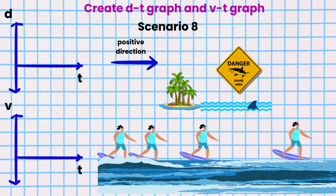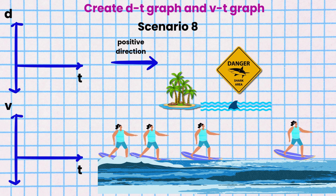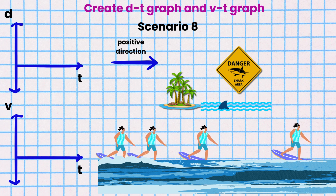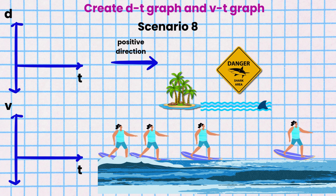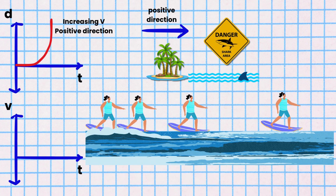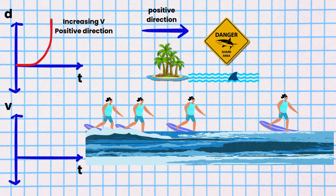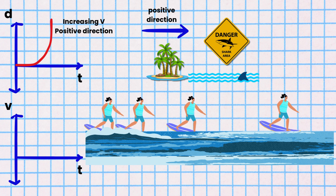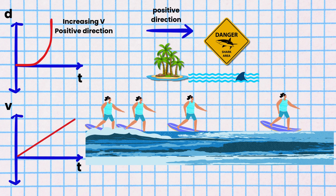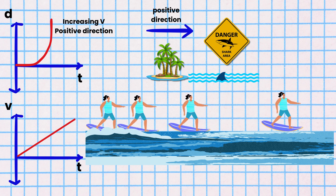Scenario 8. Ion is surfing in the ocean when — oh no — she spots a shark. Suddenly she starts speeding up to get away from the shark. She has an increasing velocity in the positive direction. The DT graph is a curve that gets steeper in the positive direction. The VT graph would be a line with a positive slope in the positive quadrant above the time axis.